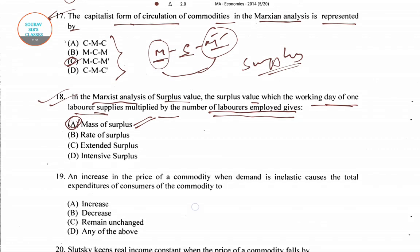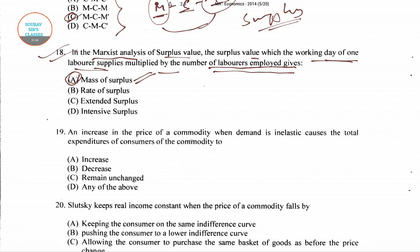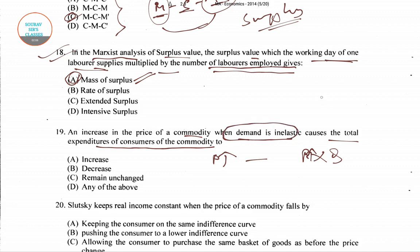Question number 19: An increase in the price of a commodity when demand is inelastic causes the total expenditure of the consumer of this commodity to do what? Total expenditure is basically price multiplied by quantity. When price increases and demand elasticity is inelastic, the percentage change in quantity over percentage change in price is less than one.